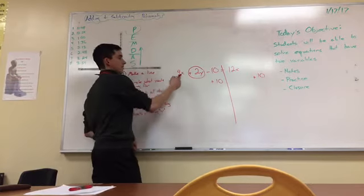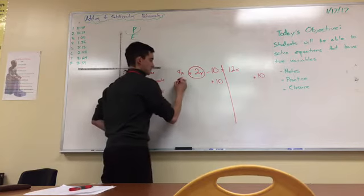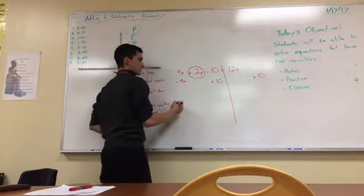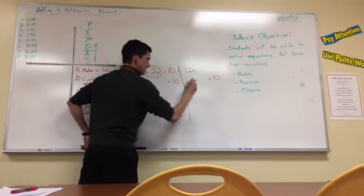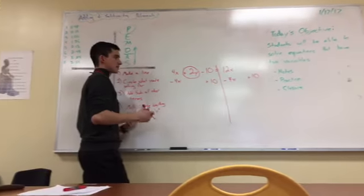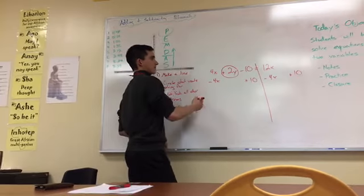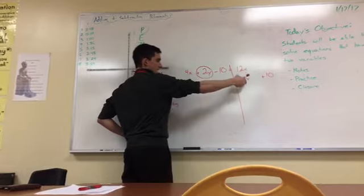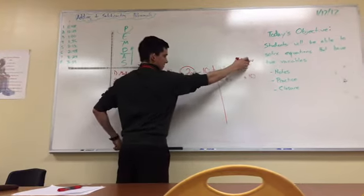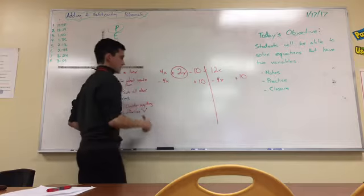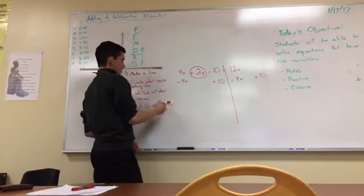Now watch this. When I do 4x here, that's a positive 4x, I'm going to subtract 4x. And what I do to this side, I need to do this side. Notice how I put these above each other. And that's just to make it easier on myself. So these will add or subtract from each other because they're like terms. They both have x's. 10, well, there's nothing to add it to, so it's just going to be there by itself at the end.